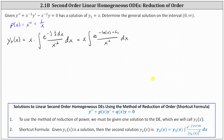Now let's simplify the exponential term. Let's first apply the power property of logarithms by moving the coefficient of negative one to the exponent on x, which gives us e to the power of natural log x to the power of negative one. Then we have times e to the power of c sub one, which is just some constant. And e to the power of natural log x to the power of negative one simplifies to x to the power of negative one.